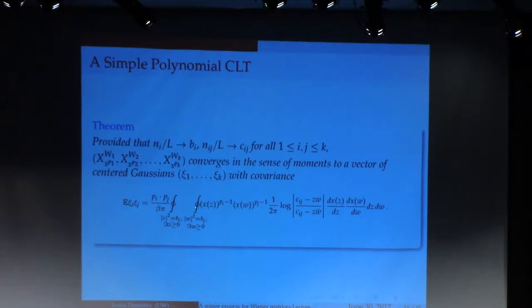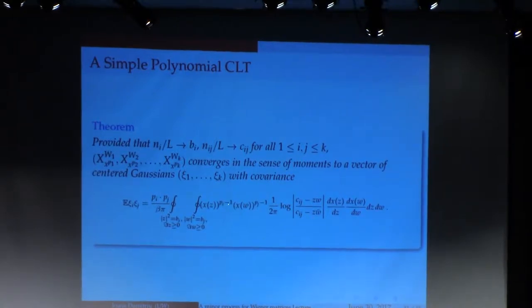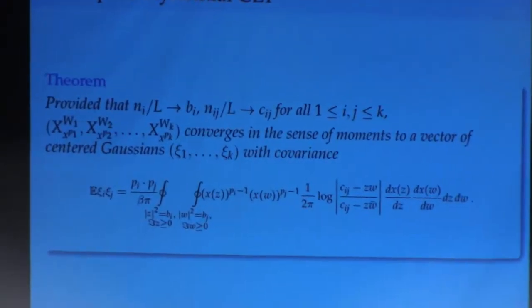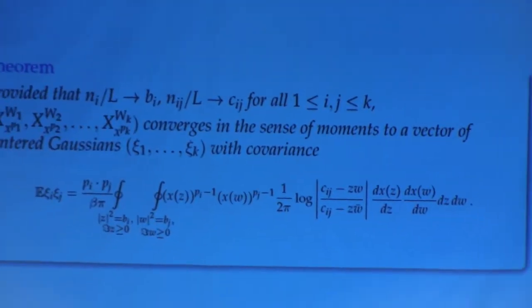And you have corresponding - so this corresponds to the derivative, if you can see, the derivatives of the polynomials. So you see here you have p sub i and x of z to the p sub i minus 1. That's like the derivative. In fact, no, it's not like the derivative. It is the derivative of the polynomial x to the p, right?